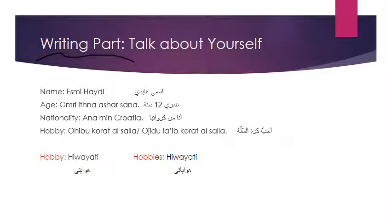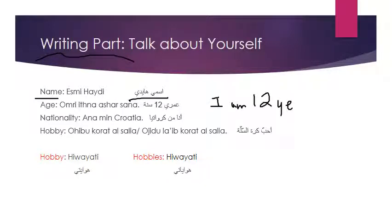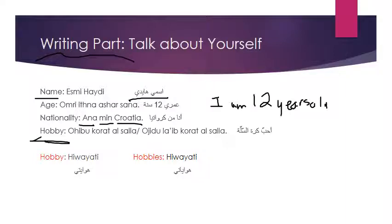Now let's go to the writing part. Talk about yourself and give personal information. Name: اسمي هيدي (My name is Heidi). Age: عمري إثنى عشرة سنة (I am 12 years old). Nationality: أنا من كرواتيا, or أنا كرواتية — it depends on gender. What's your hobby? We have three ways: 'I like basketball' is أحب كرة السلة, or 'I like playing basketball' is أحب أن ألعب كرة السلة.